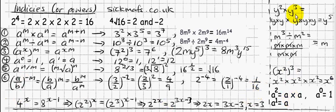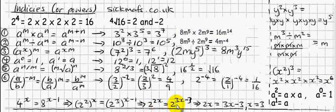Now for some A-star work. To solve for x, I try to make both sides look the same base. I know 4 is 2 squared and 8 is 2 cubed, so I rewrite them that way. Using the power-of-a-power rule, this becomes 2 to the power 2x and 2 to the power 3x minus 3. Since the bases match, the powers must be equal: 2x equals 3x minus 3, which gives x equals 3.